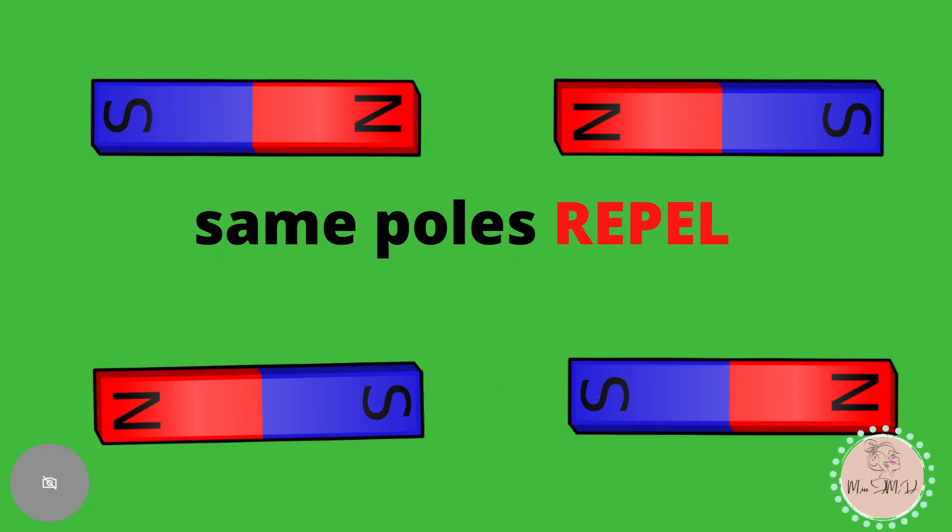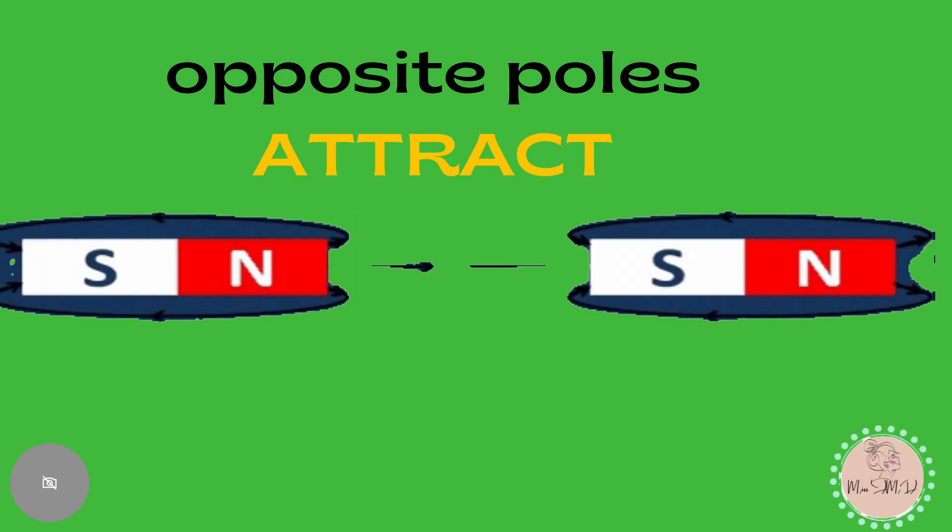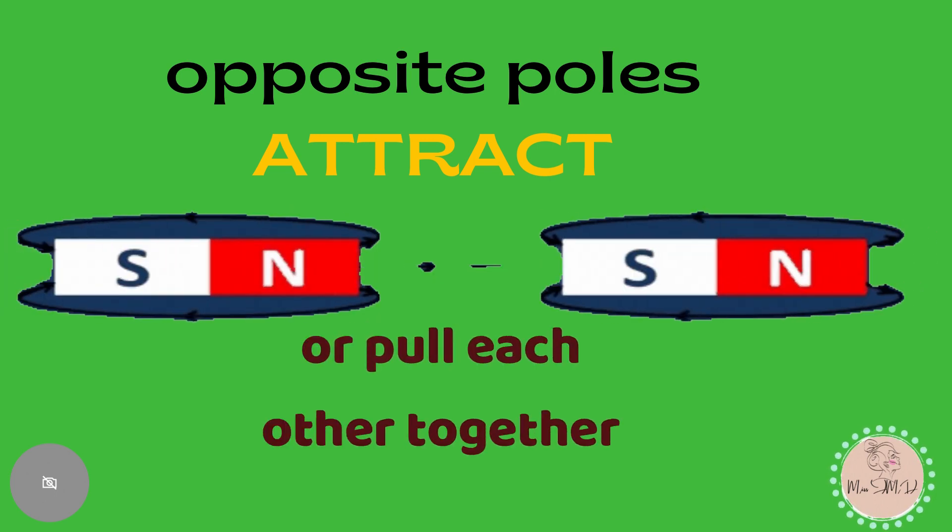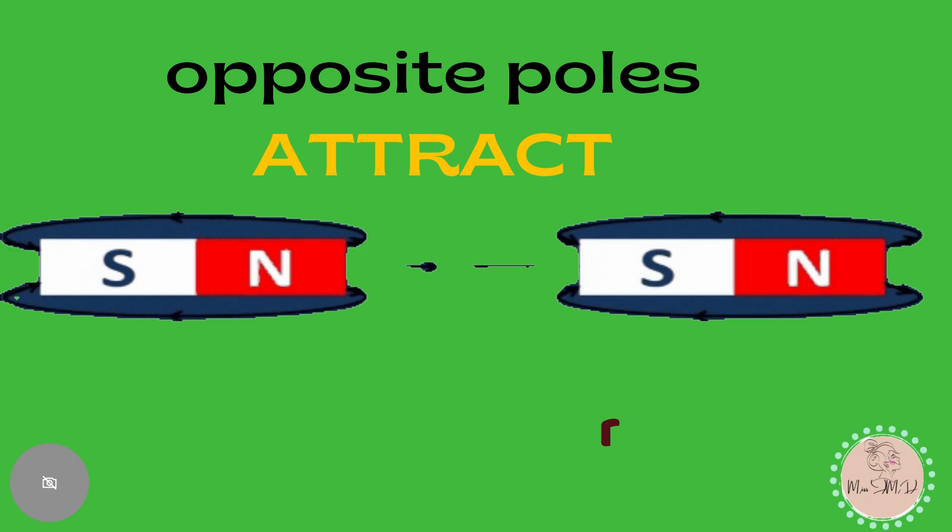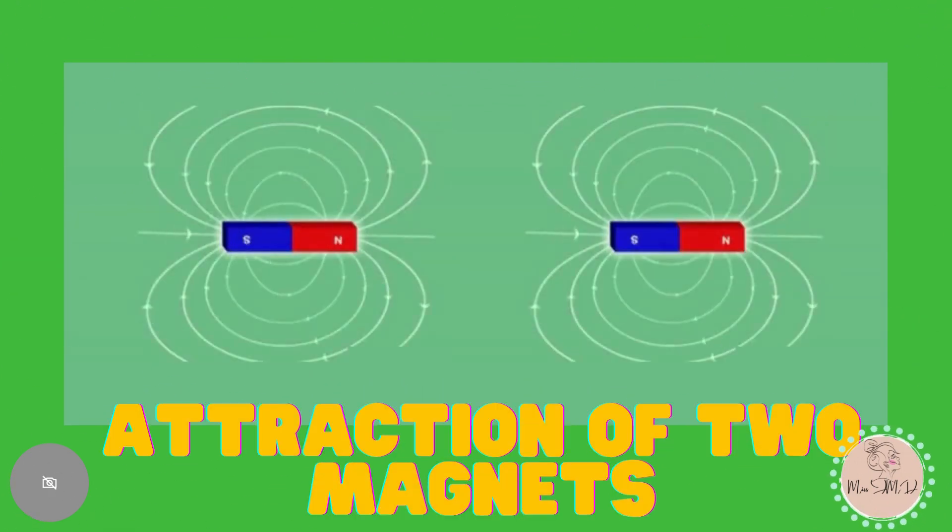When the same poles face near each other, they will repel or push each other away. When the opposite poles face near each other, they will attract or pull each other together. Now, look at the repulsion of two magnets. The attraction of two magnets.